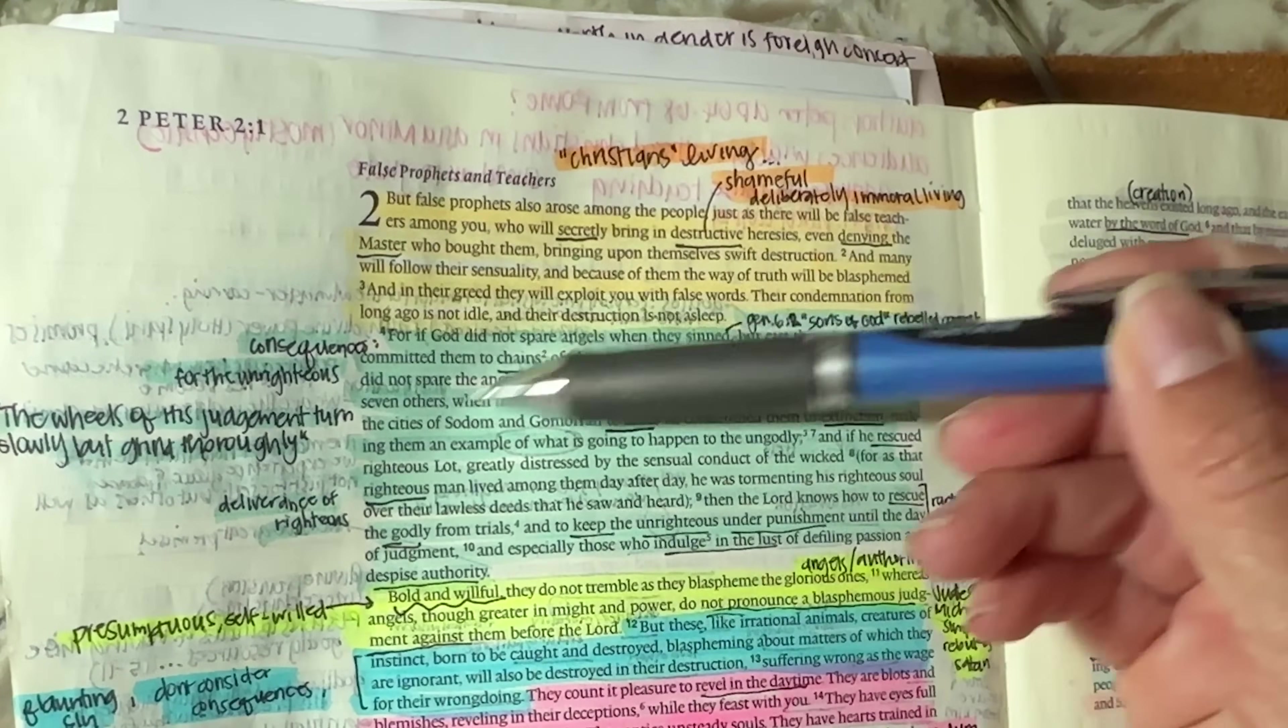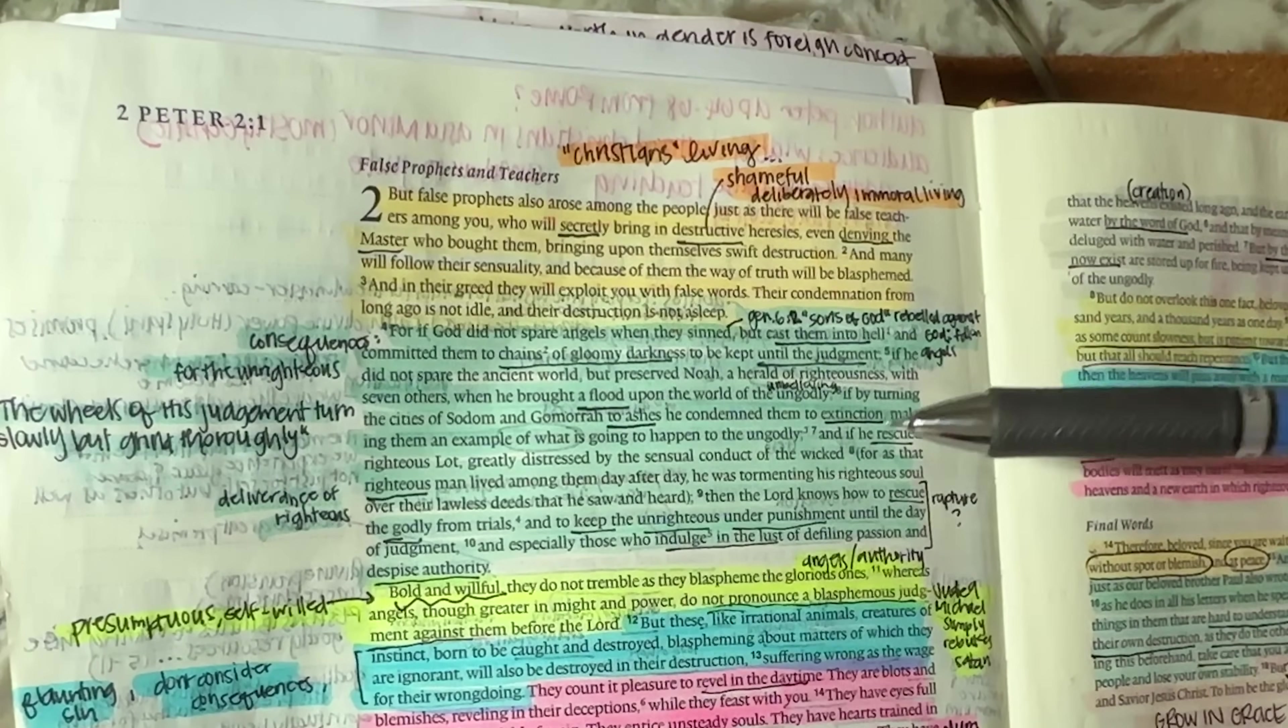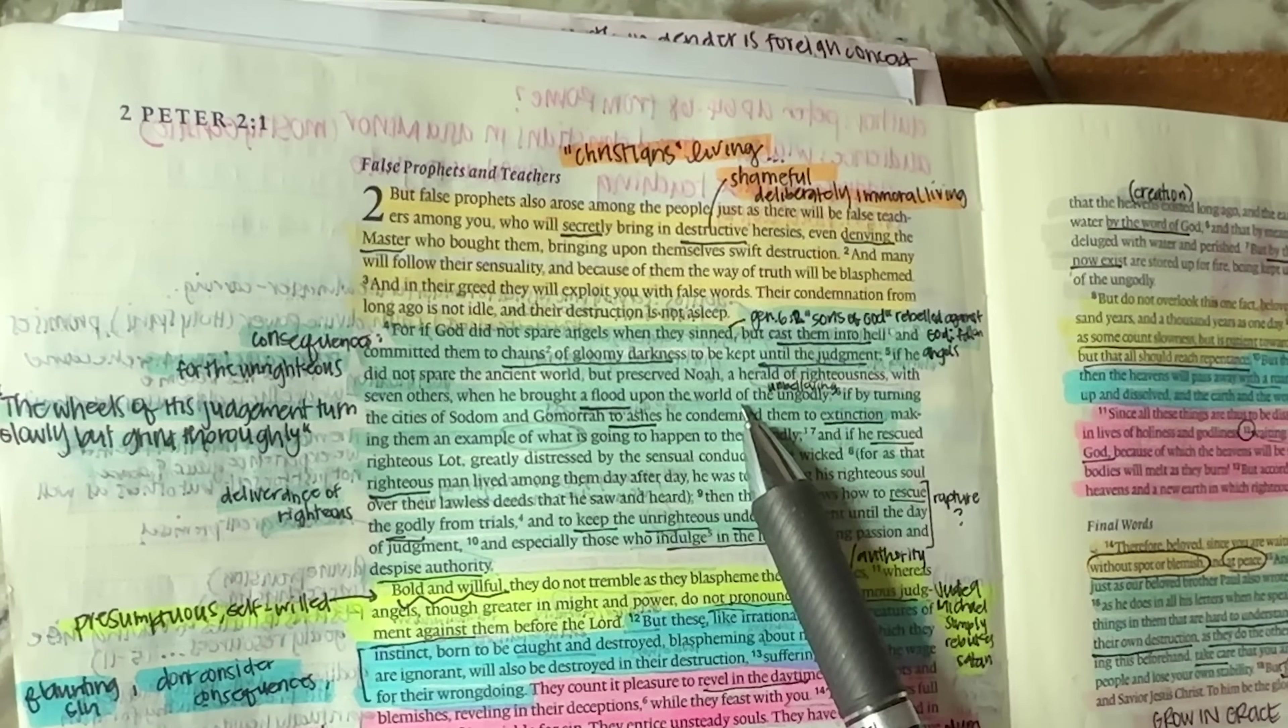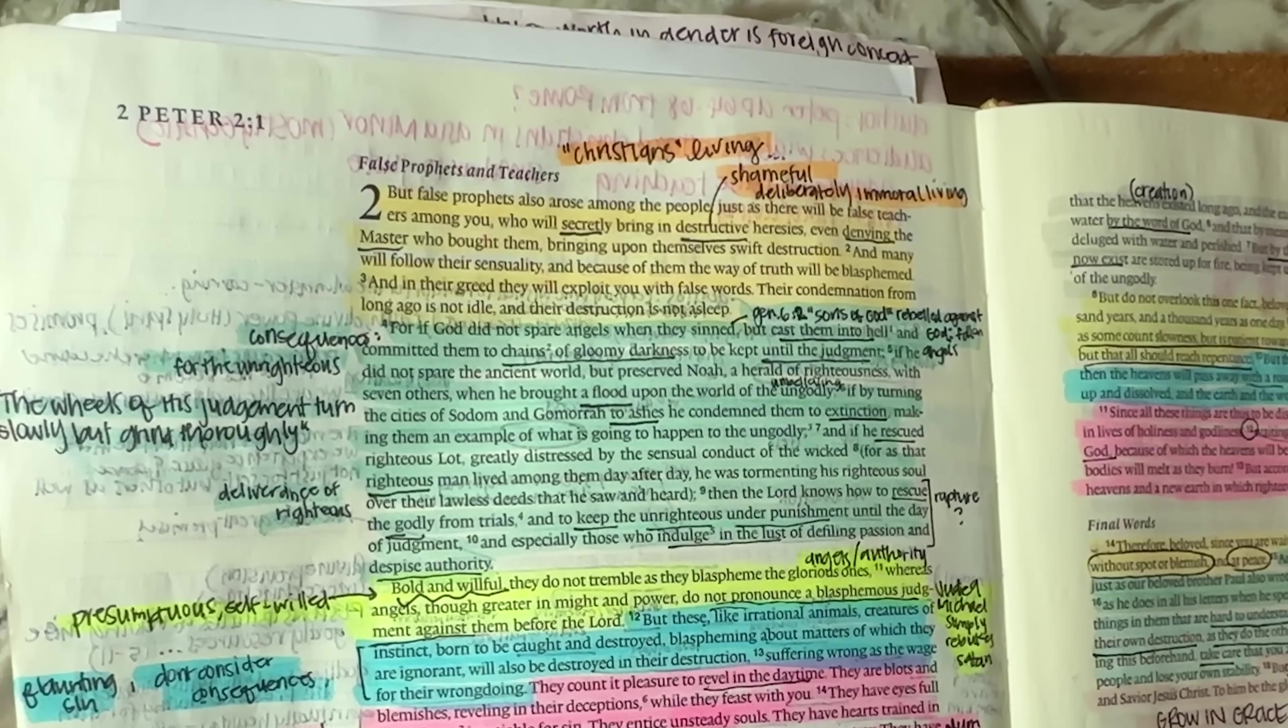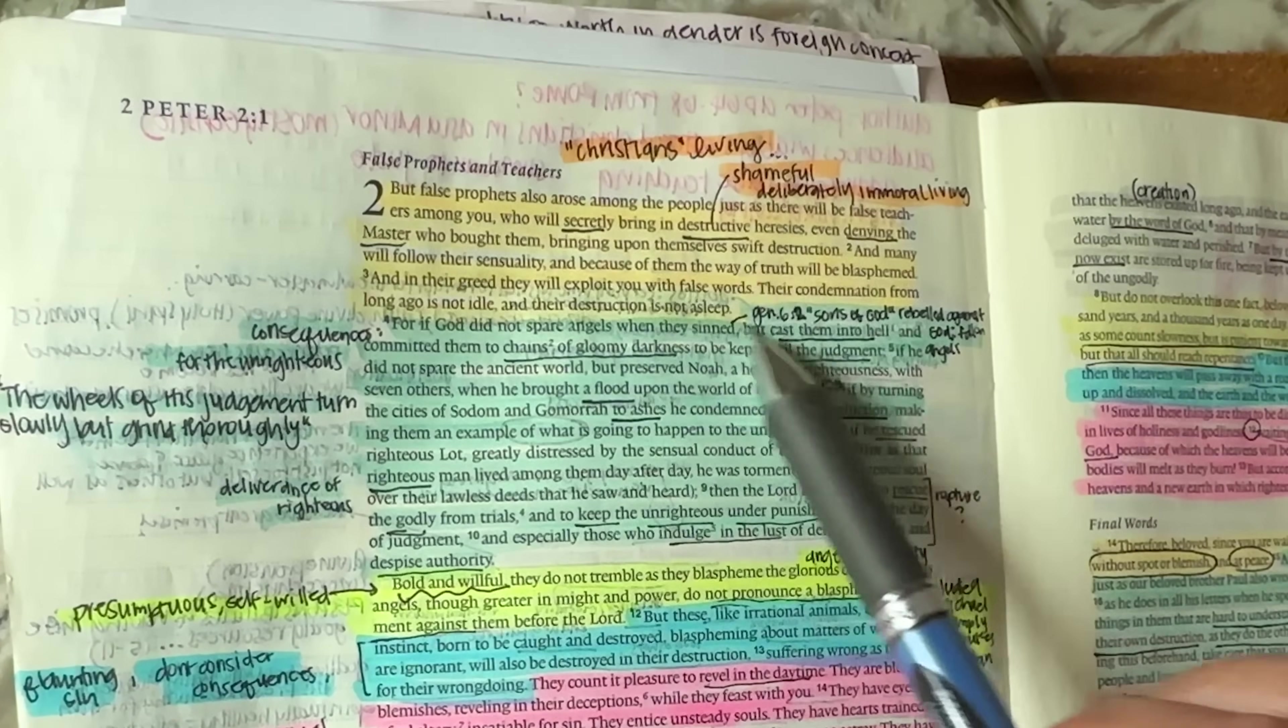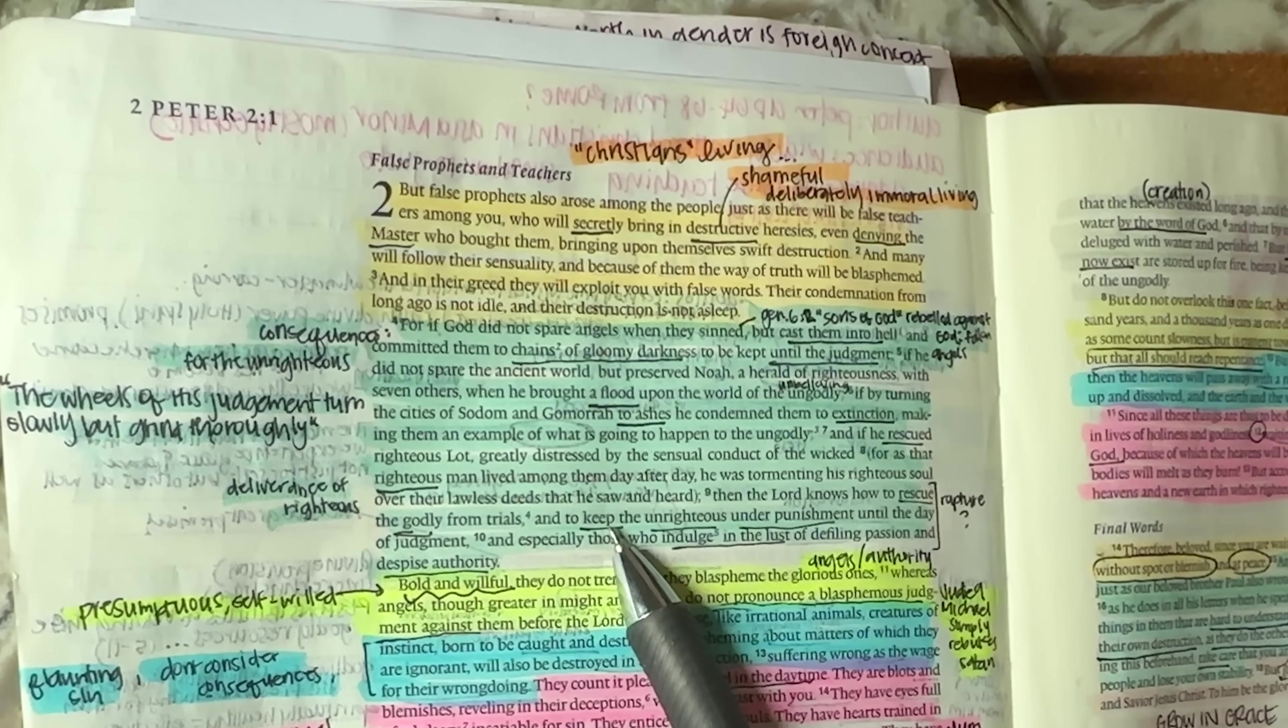And especially those who indulge in the lust of defiling passion and despise authority. So in this big, long sentence here, he is basically saying there will be consequences for those who are unrighteous and ungodly. So the wheels of his judgment may turn slowly, but trust me, they grind thoroughly. So it will happen. So he's saying just the same way that he did back then and judged all of this unrighteousness. He's going to do it again.